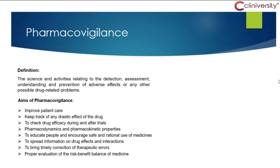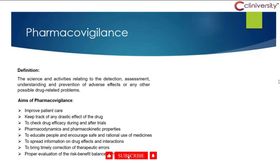The aim of pharmacovigilance is to improve patient care. Why are we discovering drugs? Ultimately to serve patients who are suffering from diseases. If the drug is unsuccessful in that, will it be of any use? No. So we have to do proper research, we have to investigate the drug in such a way that it gives fruit. To keep track of the drastic effects of the drug — sometimes a drug can cause even death, sometimes it can be very beneficial. We never know. That's why we need to study.